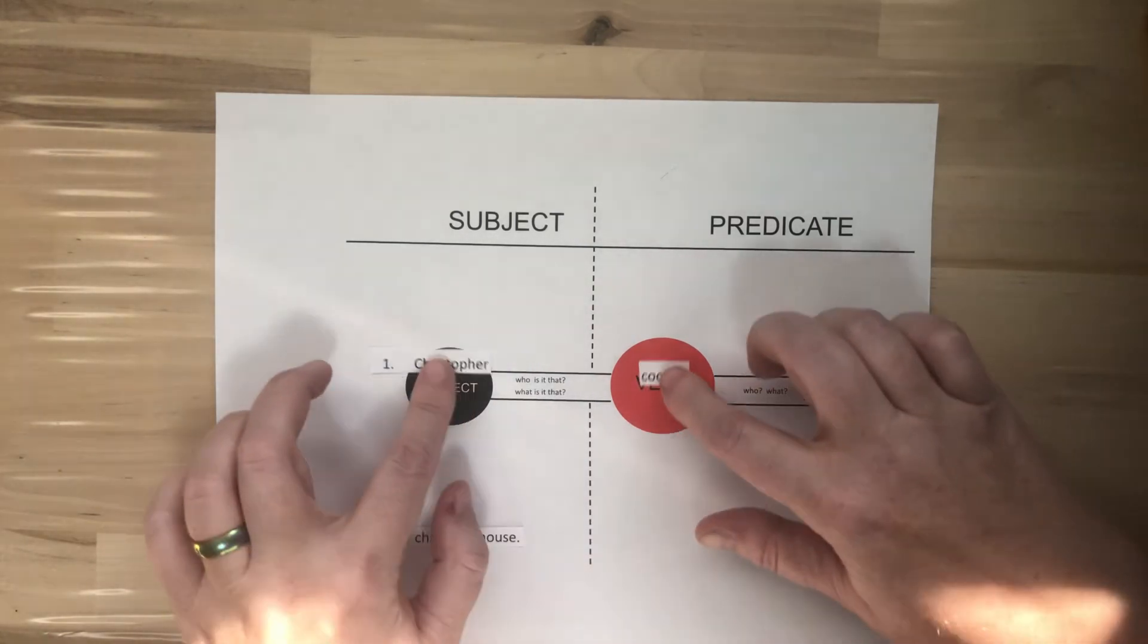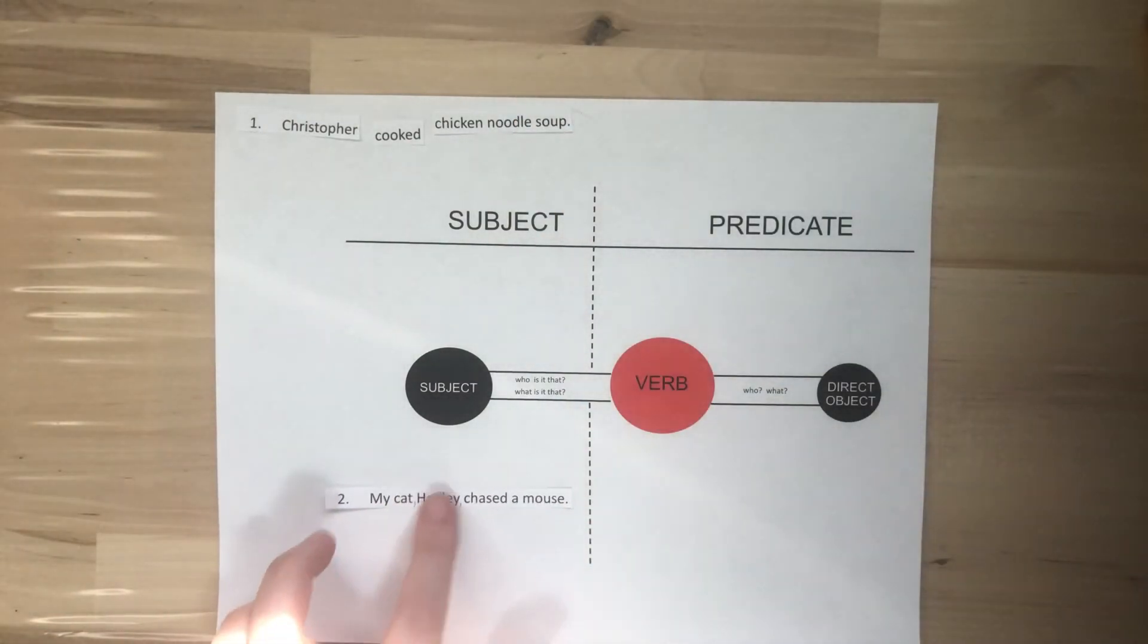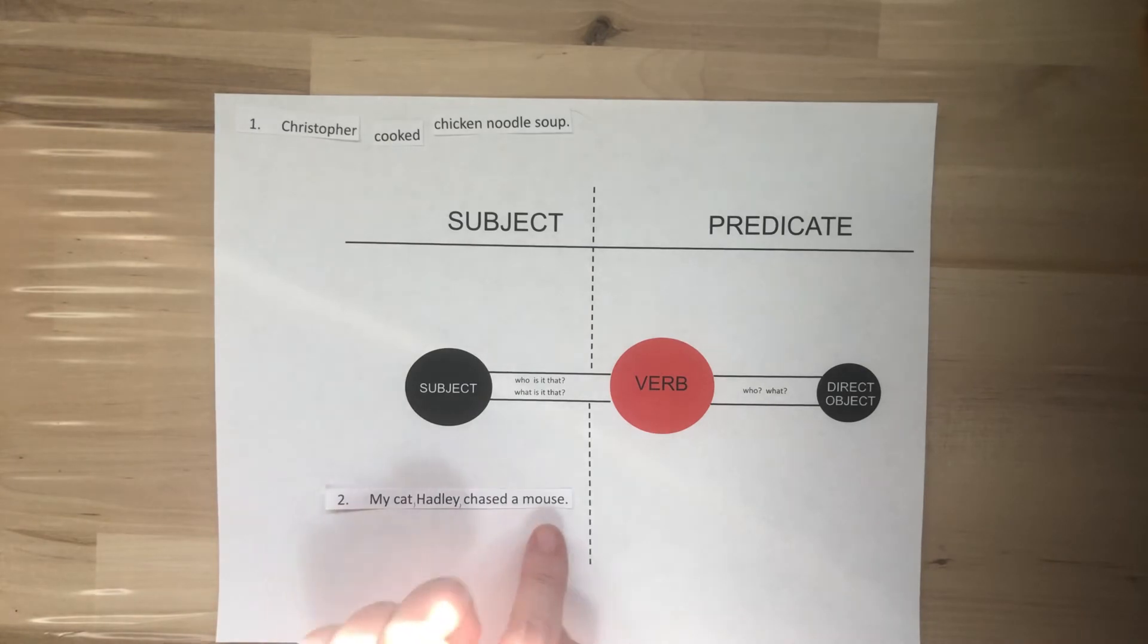Let's try one more. I'll move my sentence up here out of the way. Our second one. My cat Hadley chased a mouse.